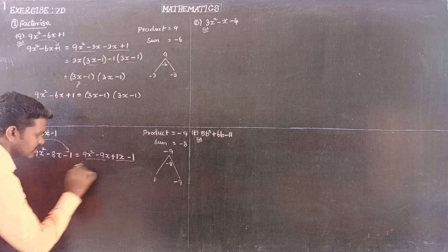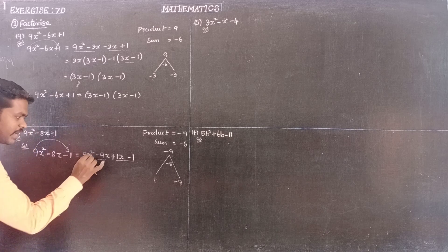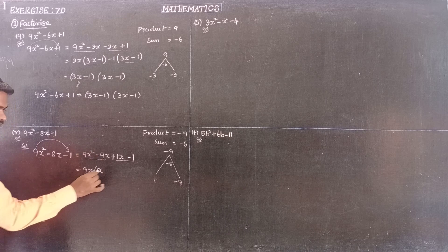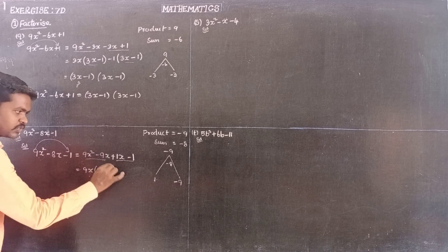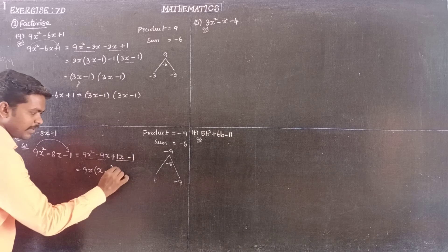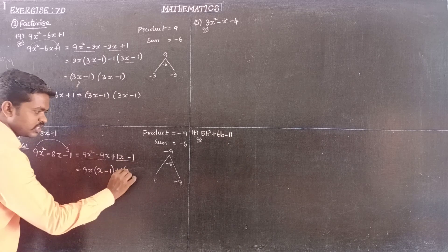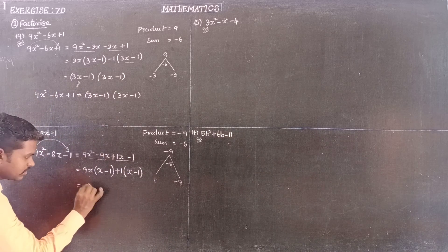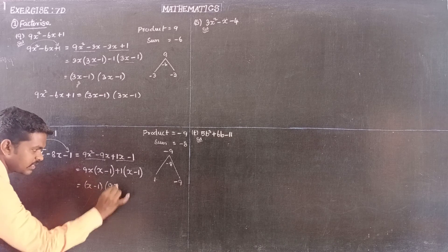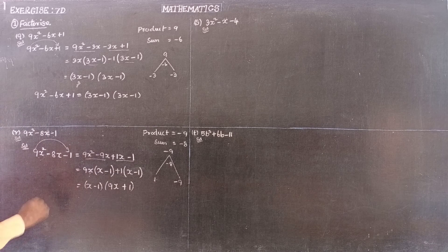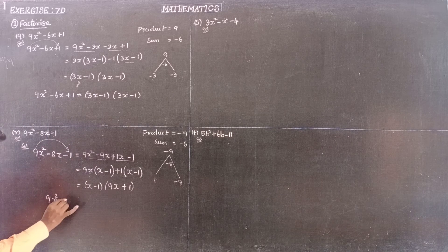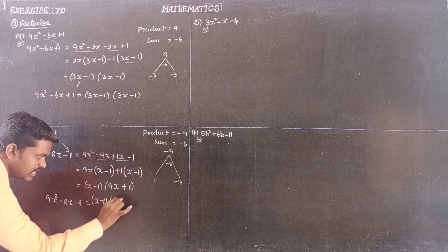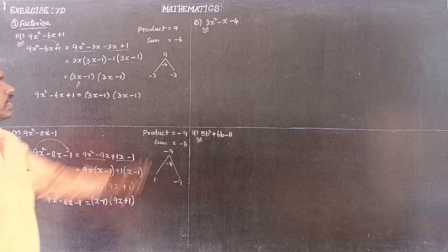Now grouping: x is the common factor in the first group giving x(9x minus 1), and minus 1 is common in the second group. The common factor is x minus 1, and the remaining factor is 9x plus 1. Therefore, 9x squared minus 8x minus 1 equals (x minus 1)(9x plus 1).